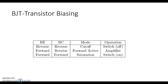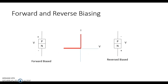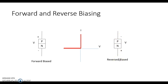Let's make sure we all understand what forward bias and reverse bias mean. When a junction is forward biased, it means we have a higher voltage potential on the P side than we do on the N side. When it's reverse biased, it's exactly the opposite — we have a higher voltage on the N side of the junction and a lower voltage potential on the P side.